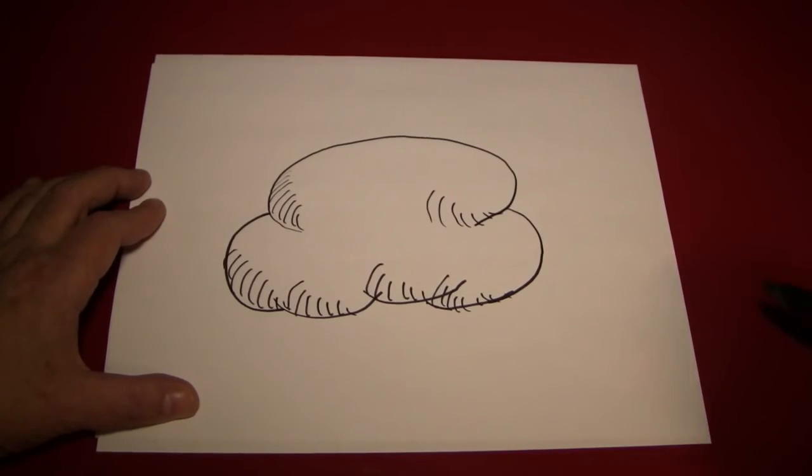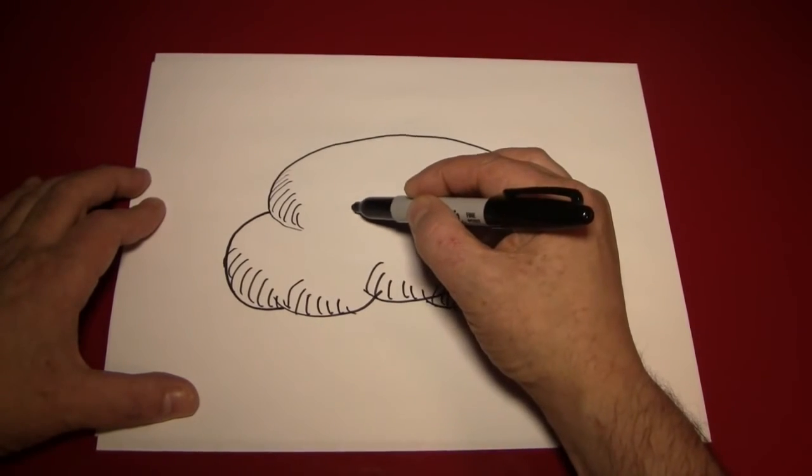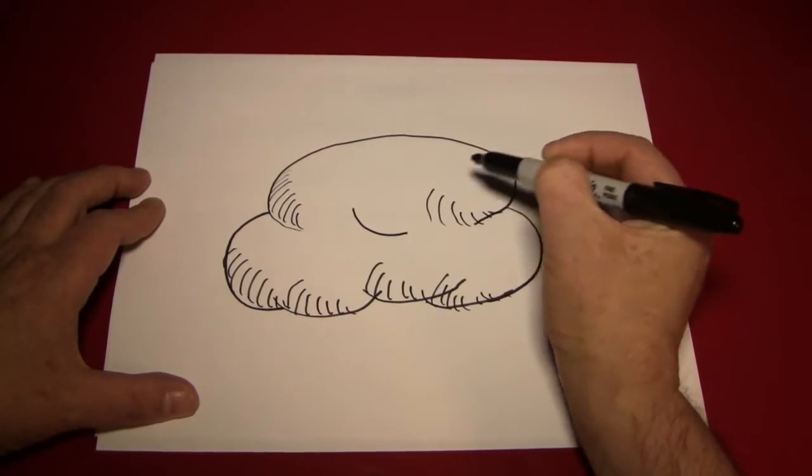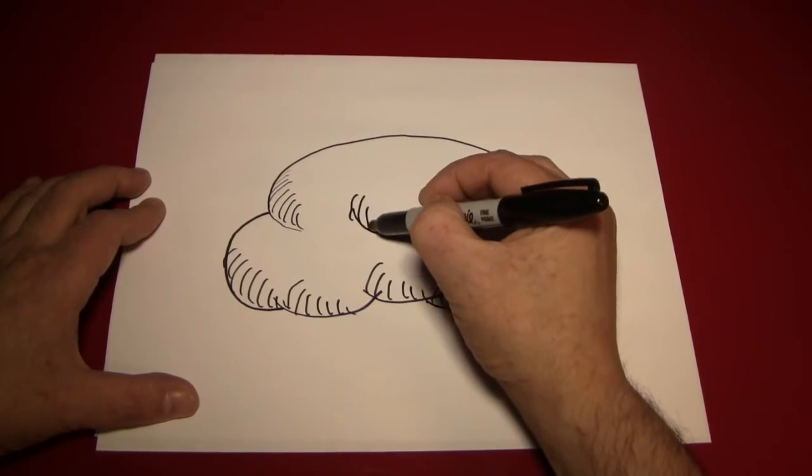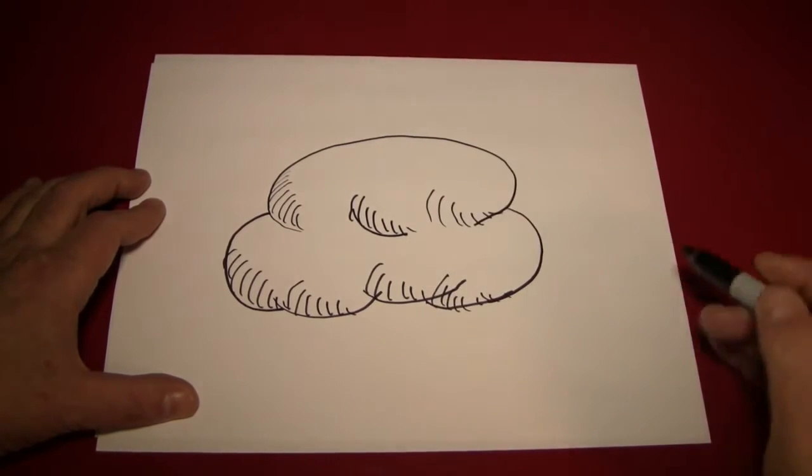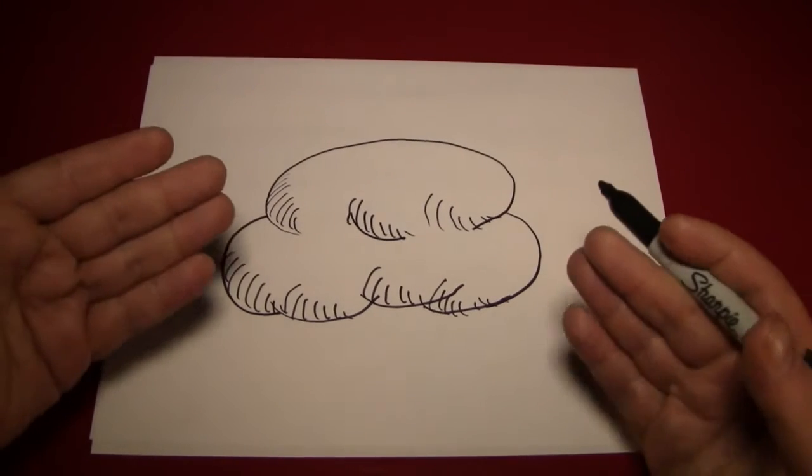And if you want to be tricky, you can even put a little C right in here, a little curved line. And again, do the shading. And voila! We have a cloud.